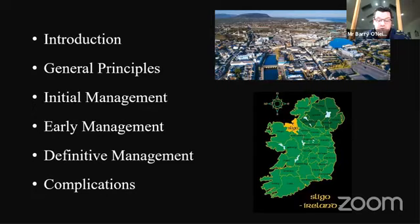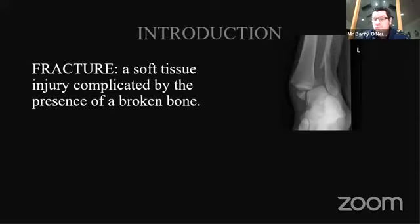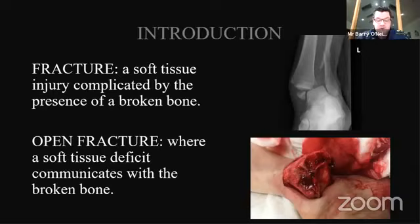It's really important to remember the basic definition of a fracture: a fracture is a soft tissue injury which just happens to be complicated by the presence of a broken bone. If you do not respect the soft tissues, then no matter how good your surgical management of the injury is, it's doomed to fail. An open fracture is a fracture where there's a soft tissue deficit that communicates with the broken bone, and this deficit breaches the body's primary defence against contamination, significantly raising the risk of deep infection in the soft tissues and in the bone itself.